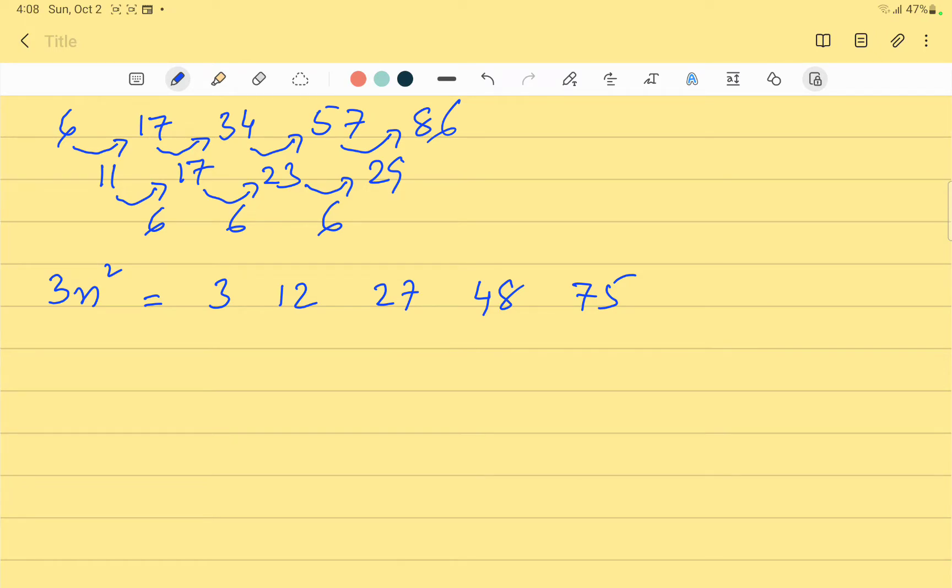Now we subtract the 3n² series from the original series. Our original series is 6, 17, 34, 57, 86. So we will be subtracting the series of 3n² from the original series.